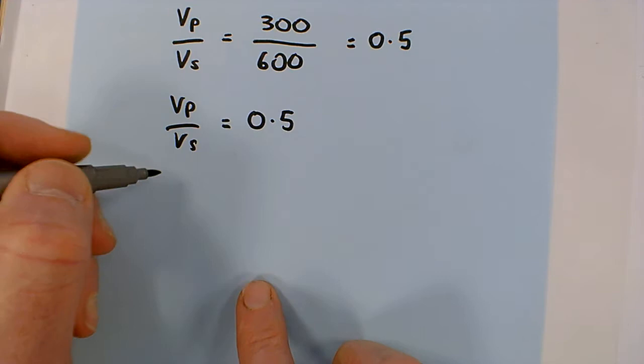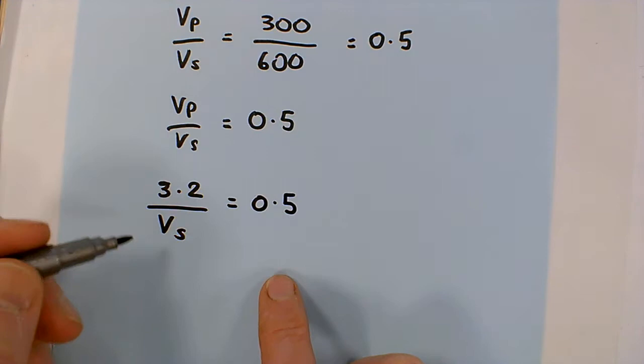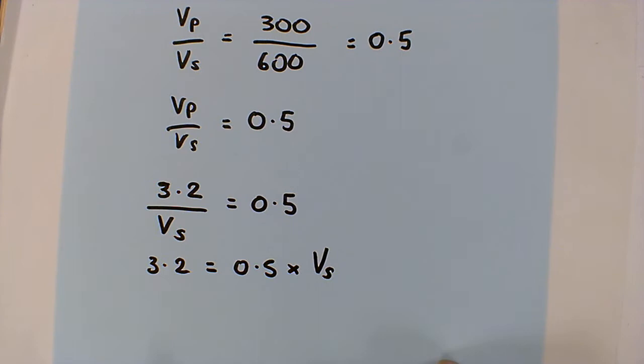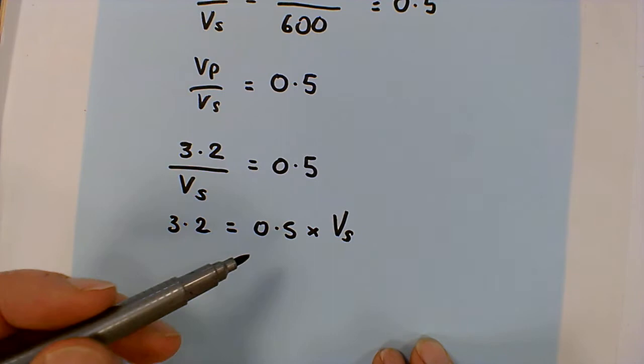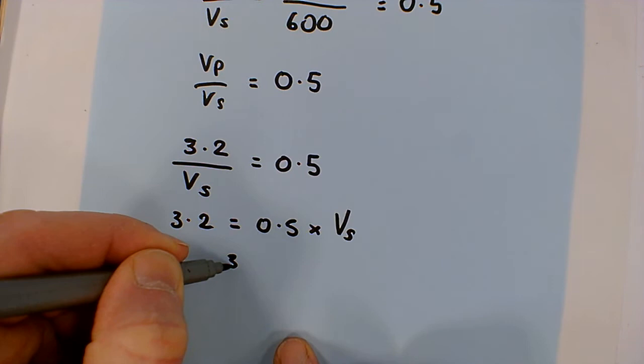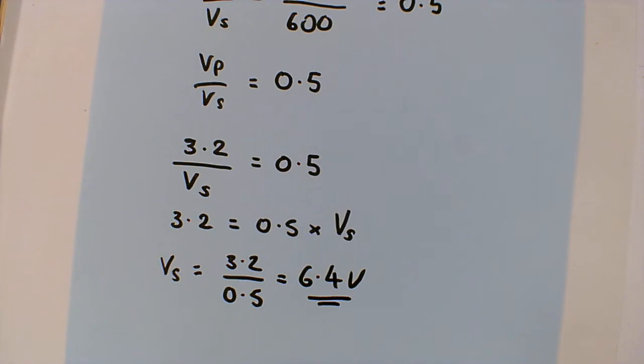So VP divided by VS equals 0.5. Now we know VP is 3.2, so 3.2 divided by VS equals 0.5. And so if we rearrange that, 3.2 equals 0.5 times VS. Now all I need to do, you possibly can do this in your head, but you could do one of two things: what times a half is equal 3.2 or go 3.2 divided by 0.5. So VS equals 3.2 divided by 0.5 which equals 6.4 volts.